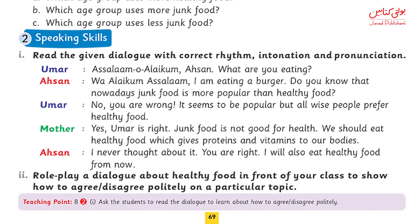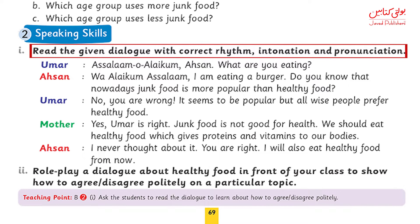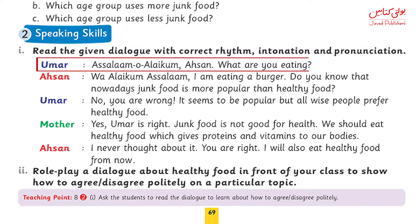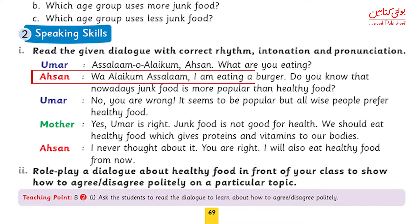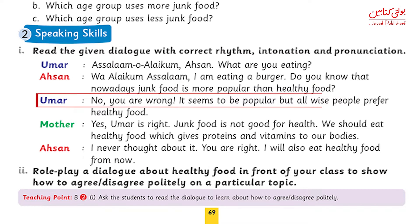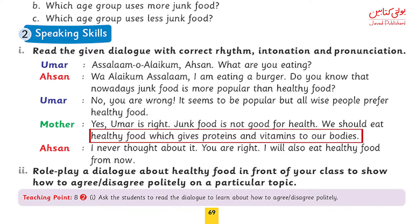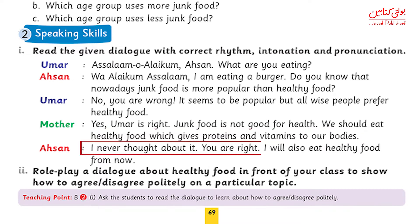Now let's do the speaking skills on the same page. Today we will do a dialogue about agreeing and disagreeing politely. Umar says: Assalamu Alaikum Ahsan, what are you eating? Ahsan says: Walaikum Assalam, I am eating a burger. Do you know that nowadays junk food is more popular than healthy food? Umar says: No, you are wrong. It seems to be popular but all wise people prefer healthy food. Mother says: Yes, Umar is right. Junk food is not good for health. We should eat healthy food which gives proteins and vitamins to our bodies.